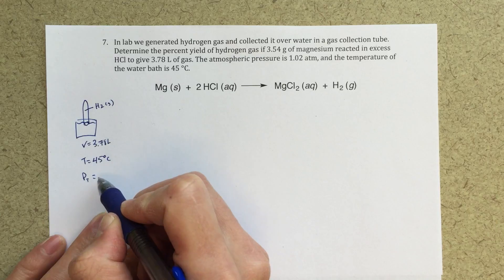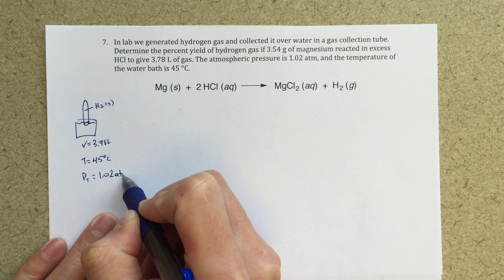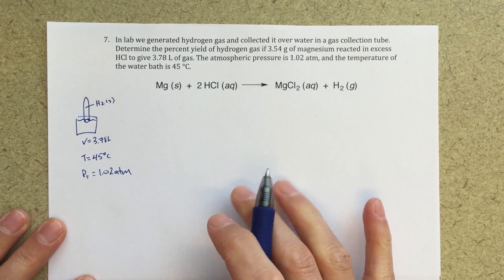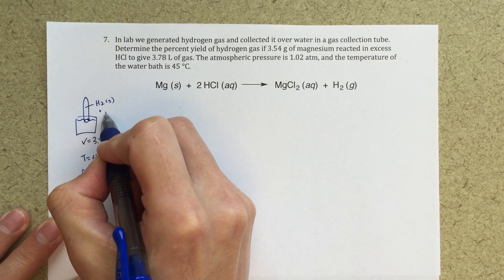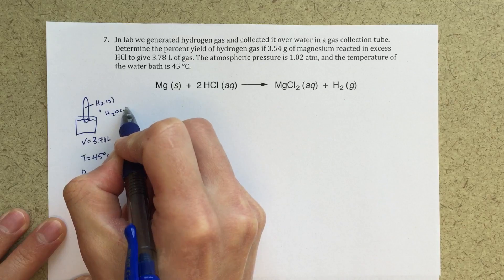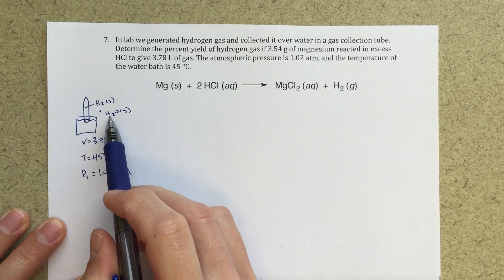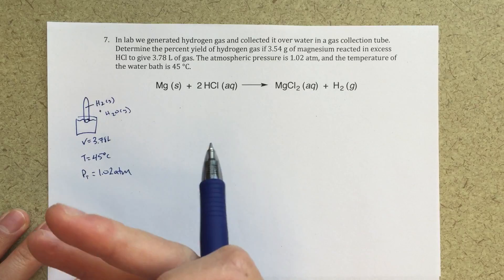Now I'm going to write P total, and the reason that I'm writing P total is because not only do I have H2 gas in there, but I will also have H2O gas. Every single time we collect gas over water, there will be some water vapor associated with that.